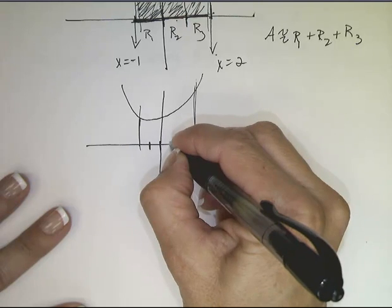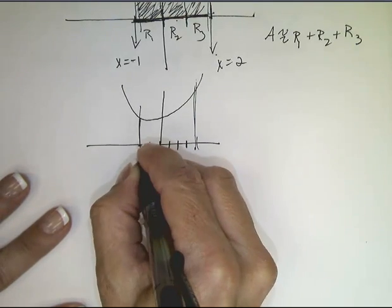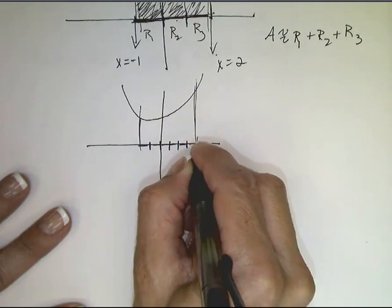So it would be a chunk here, there, there, there, and there. So that's one interval, two intervals, three intervals, four intervals, five intervals, six intervals.